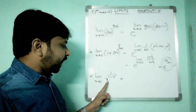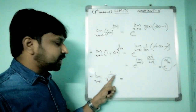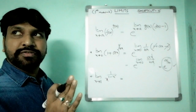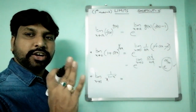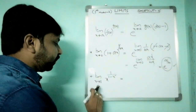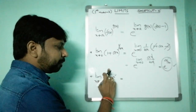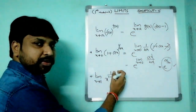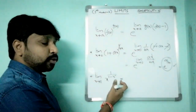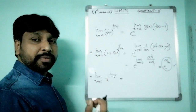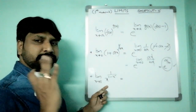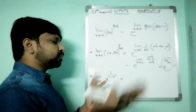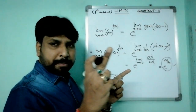Second example: limit x tends to 1 of x^(1/(1−x²)). First check whether it is of the 1^∞ form. Substituting x = 1 gives 1^(1/(1−1)) = 1^(1/0) = 1^∞. Yes, it is of the 1^∞ form.